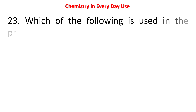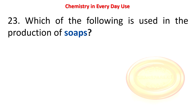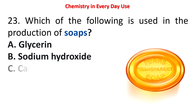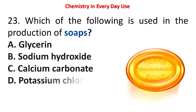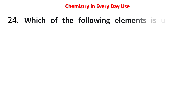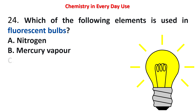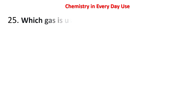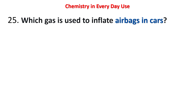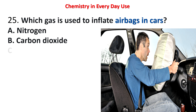Next question: which of the following is used in the production of soaps? Options: glycerin, sodium hydroxide, calcium carbonate, potassium chloride. The answer is sodium hydroxide. Next question: which of the following elements is used in fluorescent bulbs? Options: nitrogen, mercury vapor, helium, oxygen. The answer is mercury vapor.